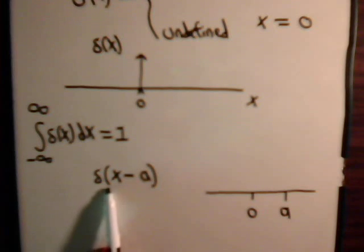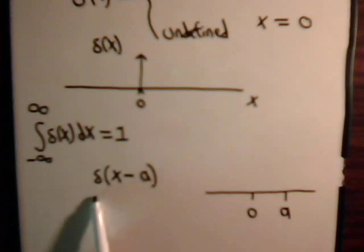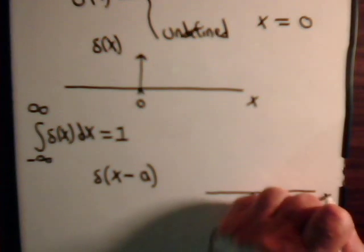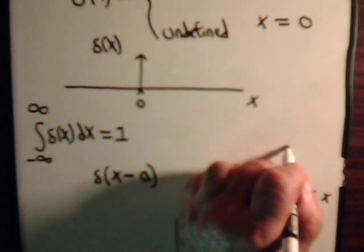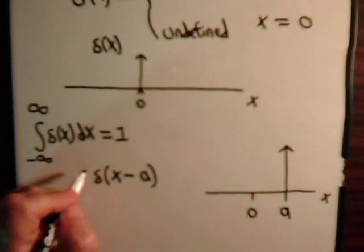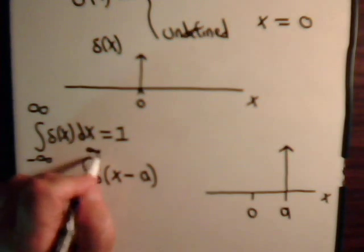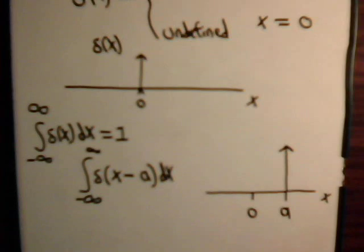Now, we know that whenever this argument does not equal 0, the Dirac delta function is 0. When the argument here equals 0, then that's undefined. Of course, this will equal 0 when x equals a, then this is undefined. So, it's like that, just simply shifted from 0 over to the point a, and again, this integral is unity.